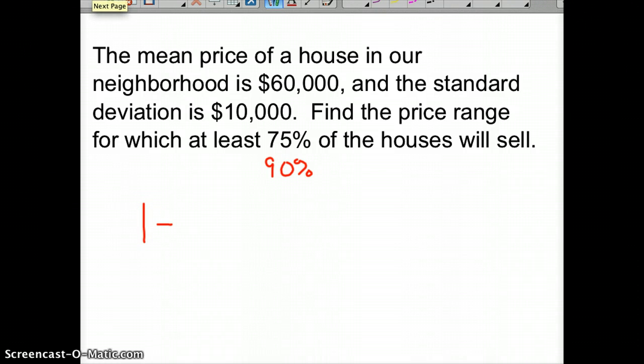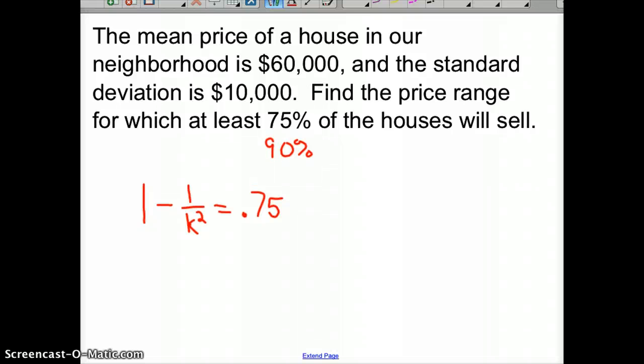So using Chebyshev's theorem, 1 minus 1 over k squared is equal to, let's do the 75% one first, which 75 converted to a decimal is 0.75. And so now you're breaking out your rational equation solving abilities. And so, again, we're going to be doing a little rational equations here. When you have a rational equation like this where a variable's on the bottom, just kind of nasty looking.